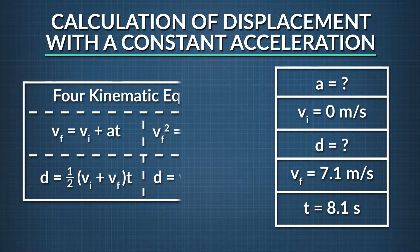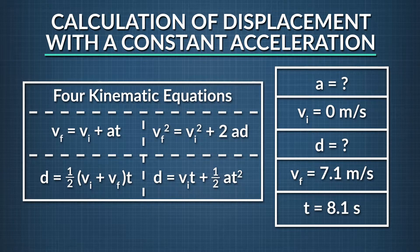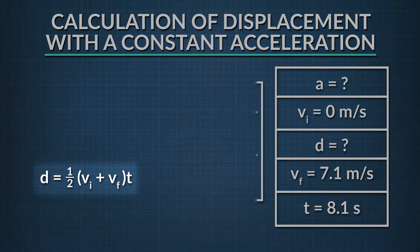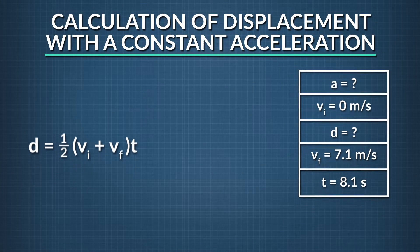Next, we want to consult the kinematic equations and determine which equation we should use to solve the problem based on the variables that we are given. Since we need to solve for displacement, and the only variables we've been given are initial and final velocities along with the time elapsed, the equation we should use would be: displacement equals one half times the quantity of initial velocity plus final velocity, times time.